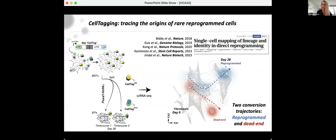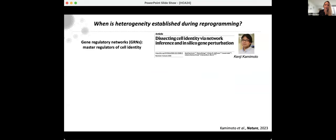We showed that it's the reprogrammed population that successfully engrafts the damaged intestine. We want to push cells from the dead-end onto the reprogrammed trajectory, or set cells on the right trajectory from the beginning. We learned that these trajectories are set very early in the reprogramming process — not later as we previously thought. Setting out to ask when heterogeneity is established, we take a gene regulatory network perspective. GRNs are master regulators of cell identity, and as reprogrammers, we love using transcription factors to change cell identity.